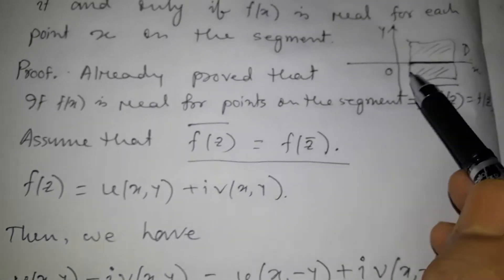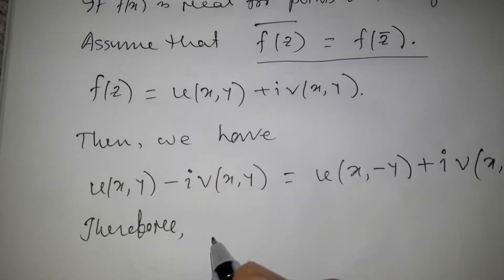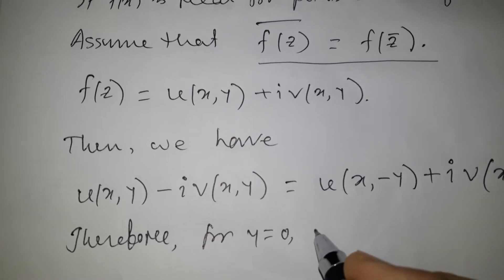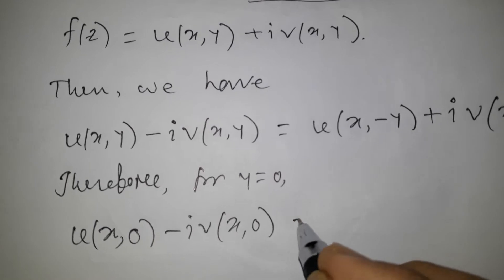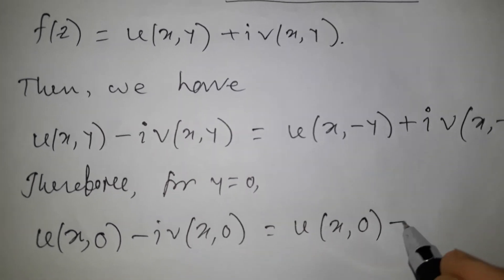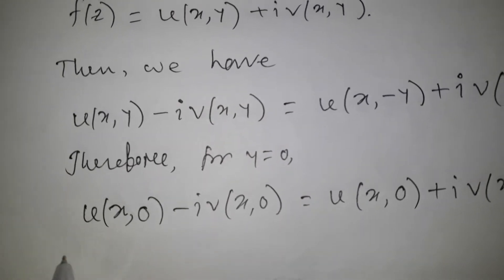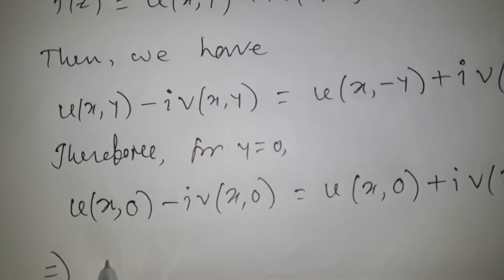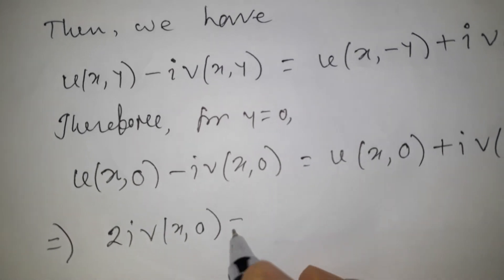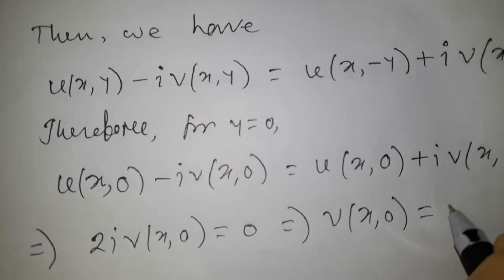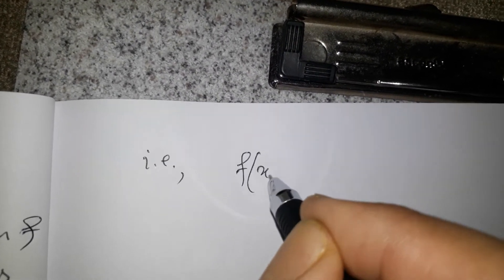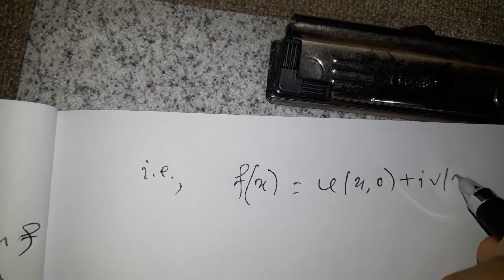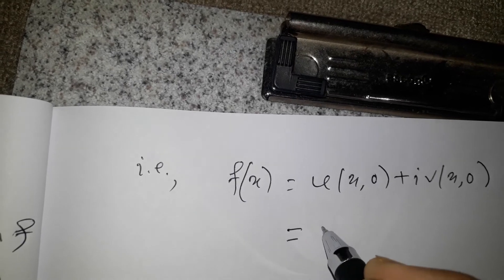For the line segment we have y = 0. So the equation becomes u(x, 0) − i·v(x, 0) = u(x, 0) + i·v(x, 0). Shifting terms, we get 2i·v(x, 0) = 0, which implies v(x, 0) = 0.